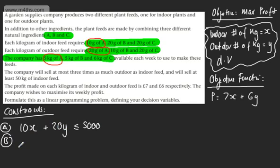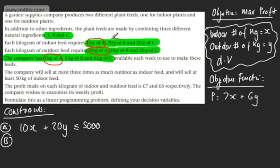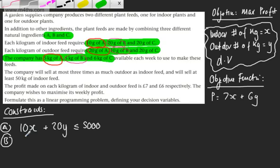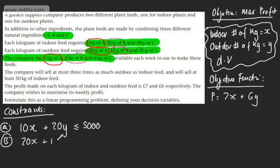Now let's set up an inequality for ingredient B. We have 20 grams of B per kg of indoor, and 10 grams of B per kg of outdoor, with a total of 5 kilograms available. So 20x plus 10y is less or equal to 5,000. I can simplify that later.